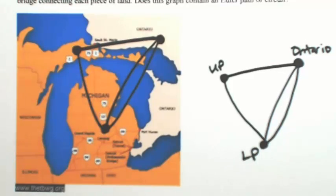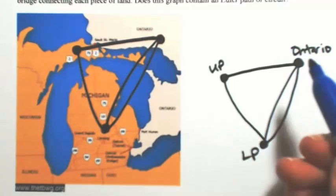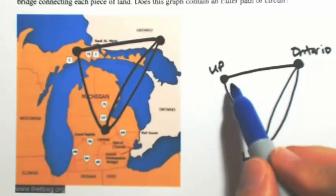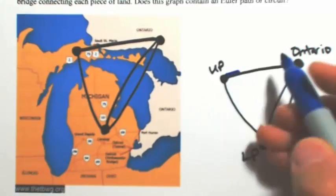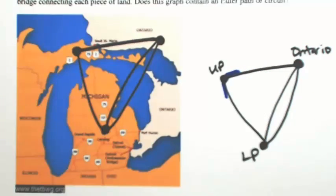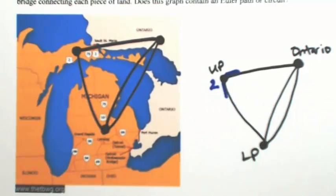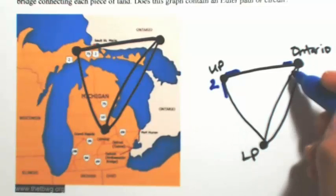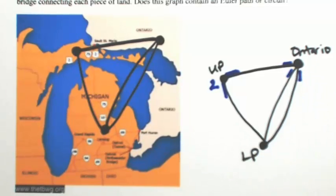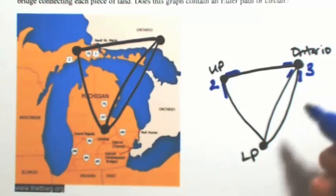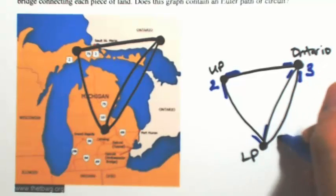Looking at the Upper Peninsula, I'm just going to grab a different color so you can see what I'm doing here. In the Upper Peninsula, I have two edges going into that. So this would have a degree of two. With Ontario, we have one, two, three. This just indicates that there's three bridges that go into Ontario. And then in the Lower Peninsula, we have one, two, three as well.